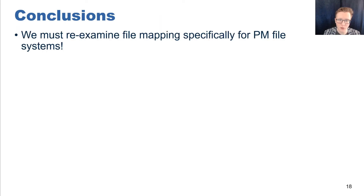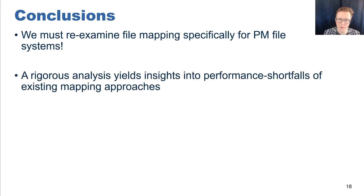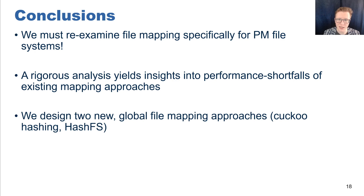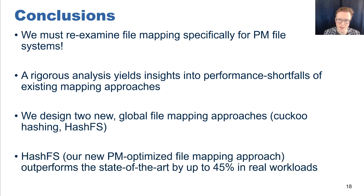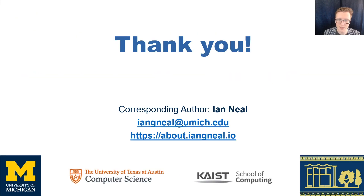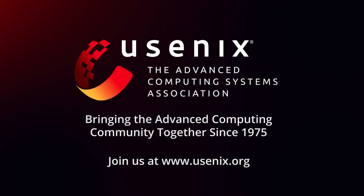In conclusion, it is important to analyze file mapping specifically in the context of persistent memory file systems, as prior assumptions about file mapping designs no longer apply — such as the need to cache file mappings in the page cache. Our analysis yielded insights about the performance of file mapping on persistent memory file systems, which we used to design two new file mapping approaches, demonstrating real end-to-end performance improvements. In particular, HashFS is able to outperform the state-of-the-art by up to 45% across a variety of workloads. Thank you for listening, and please feel free to reach out if you have any questions about our work.